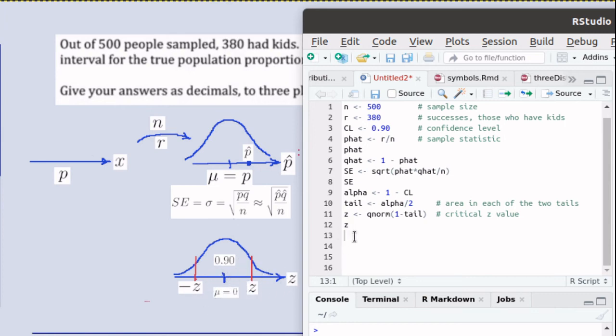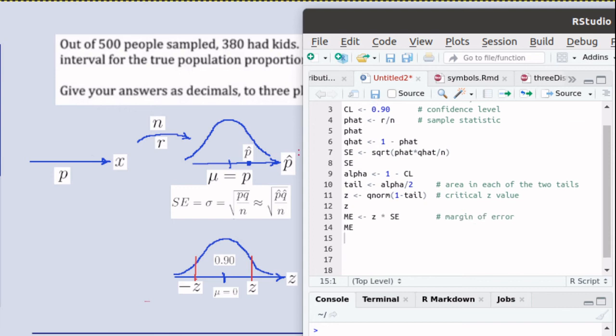So if we take that z value that we've got, which tells the number of standard deviations times SE, which is the standard deviation, that will tell us our margin of error. So we can easily find the margin of error. Once we know the margin of error, then the confidence interval is easy. We'll just take this p hat minus a margin of error, that will tell us the lower bound. P hat plus a margin of error, that will tell us the upper bound.